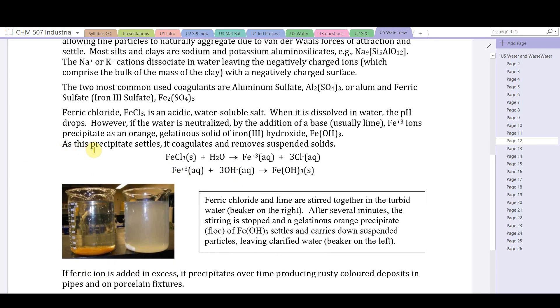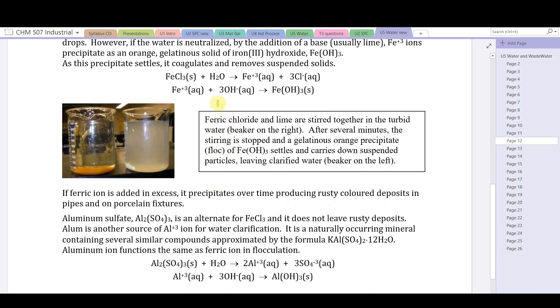As this precipitate settles, it coagulates, pulls together, removes suspended solids. Here's the process of ferric chloride dissolving and then precipitating with some hydroxide ion from basic solution. Doesn't have to be very basic to do so - even neutral solutions will contribute enough hydroxide to precipitate some ferric hydroxide.